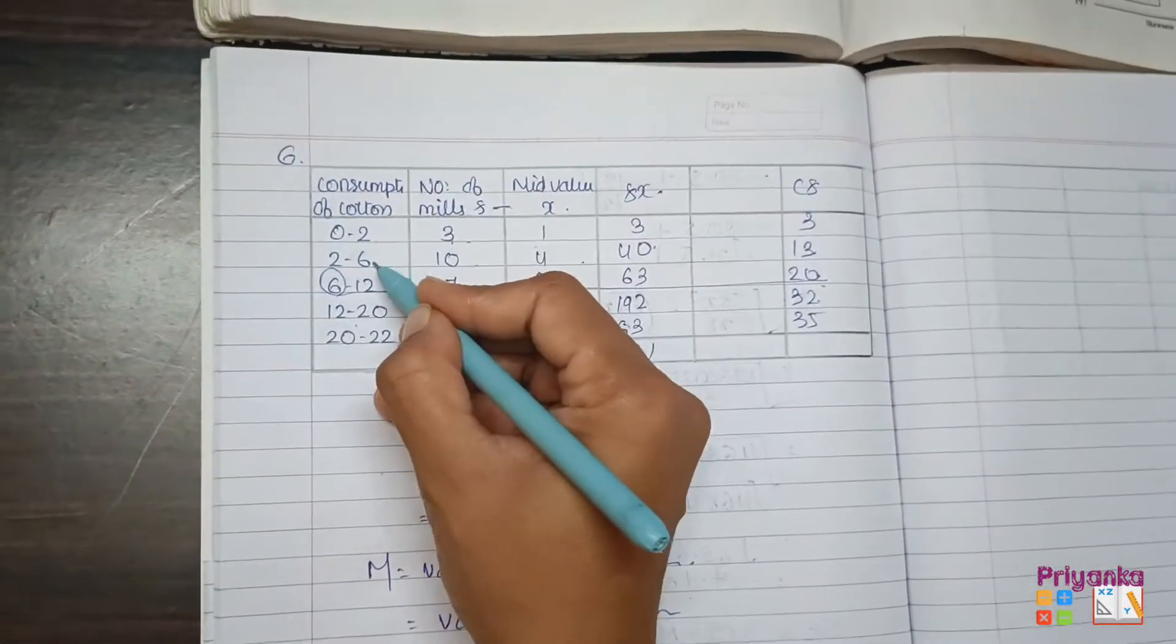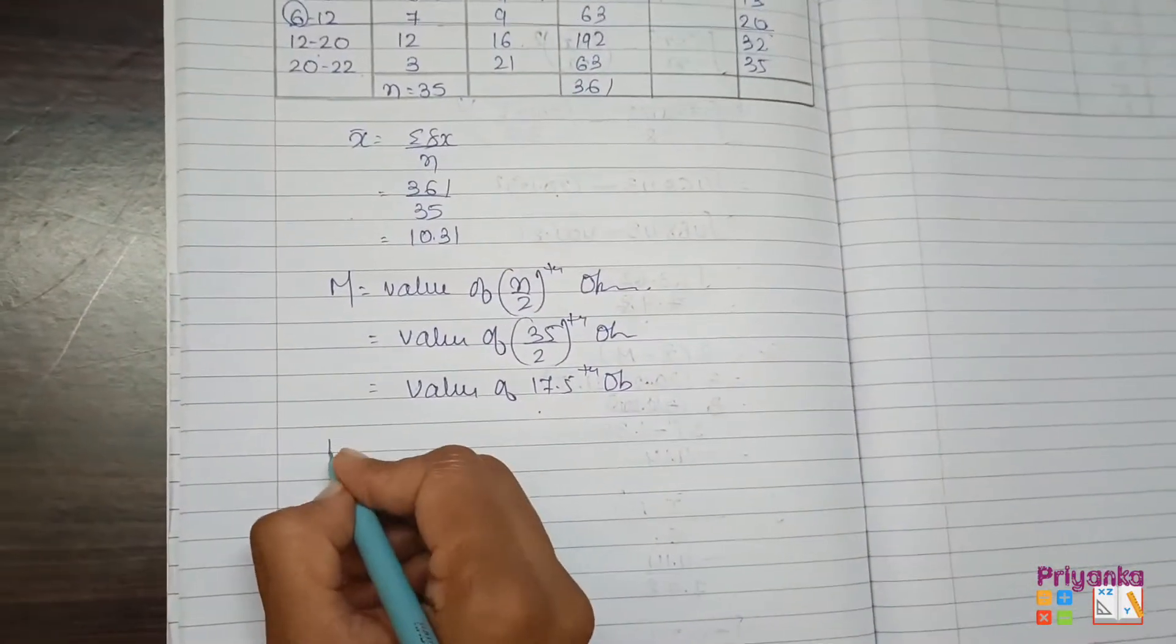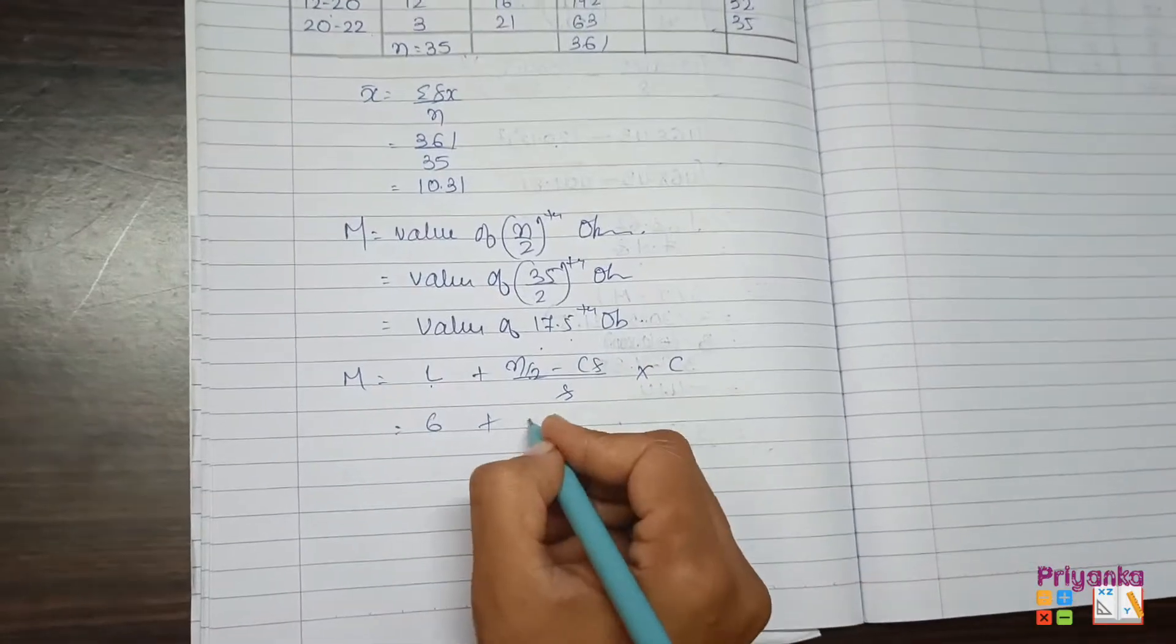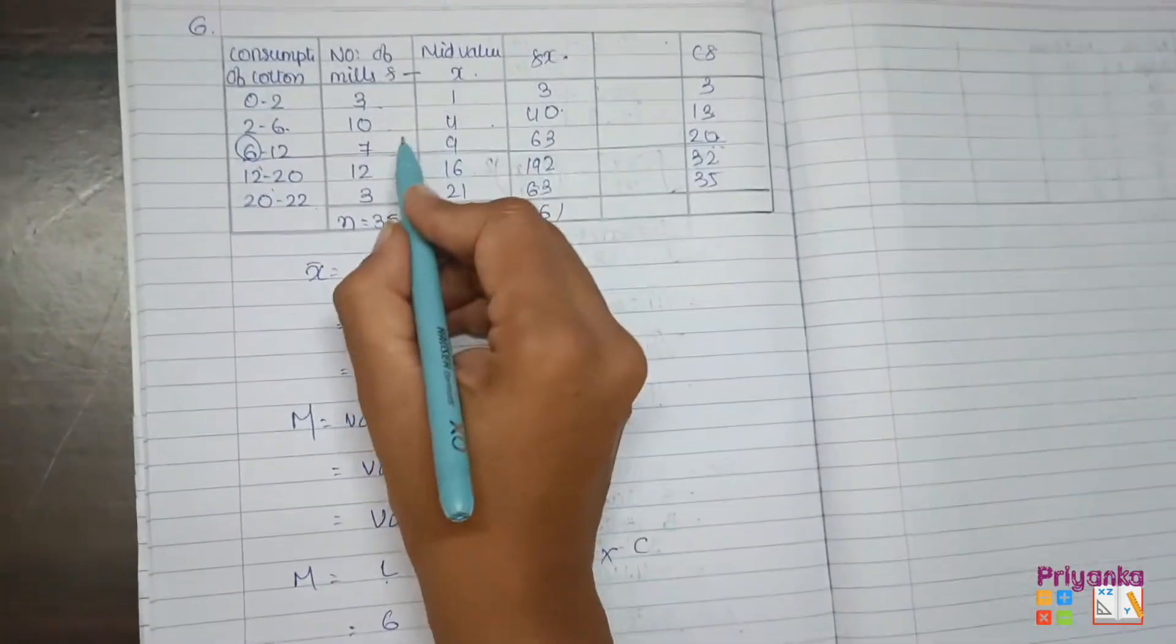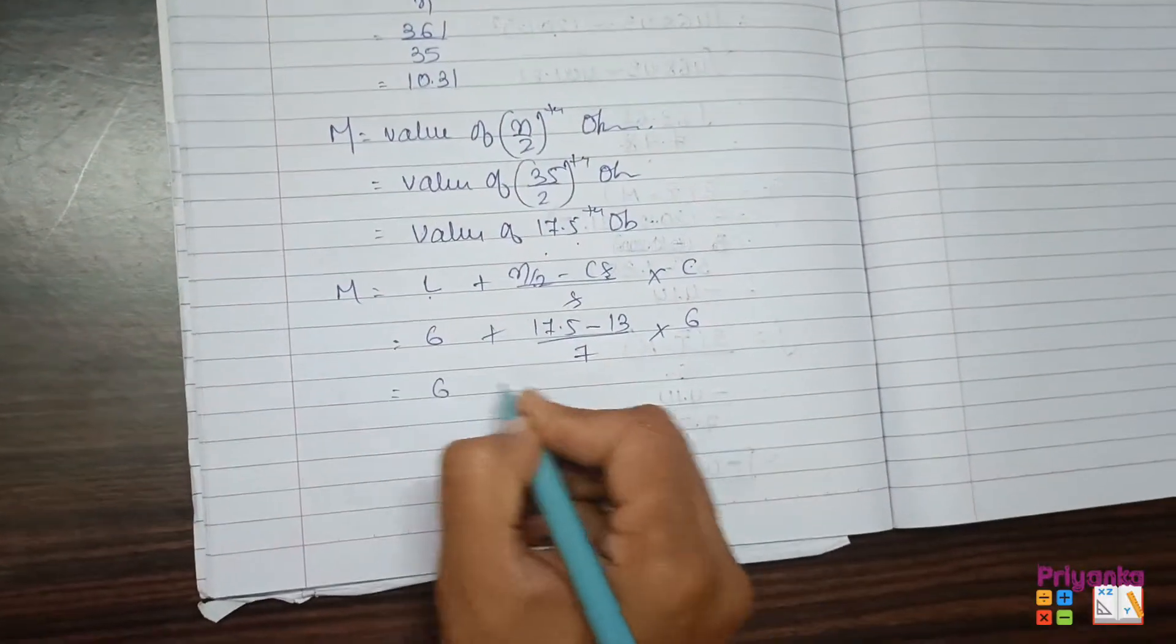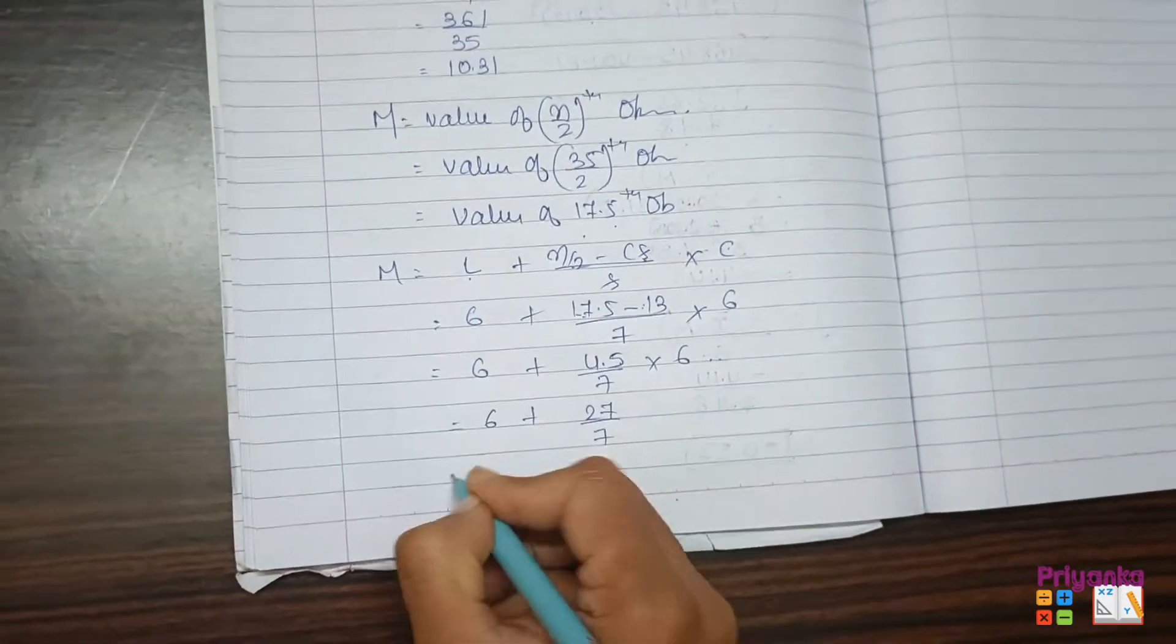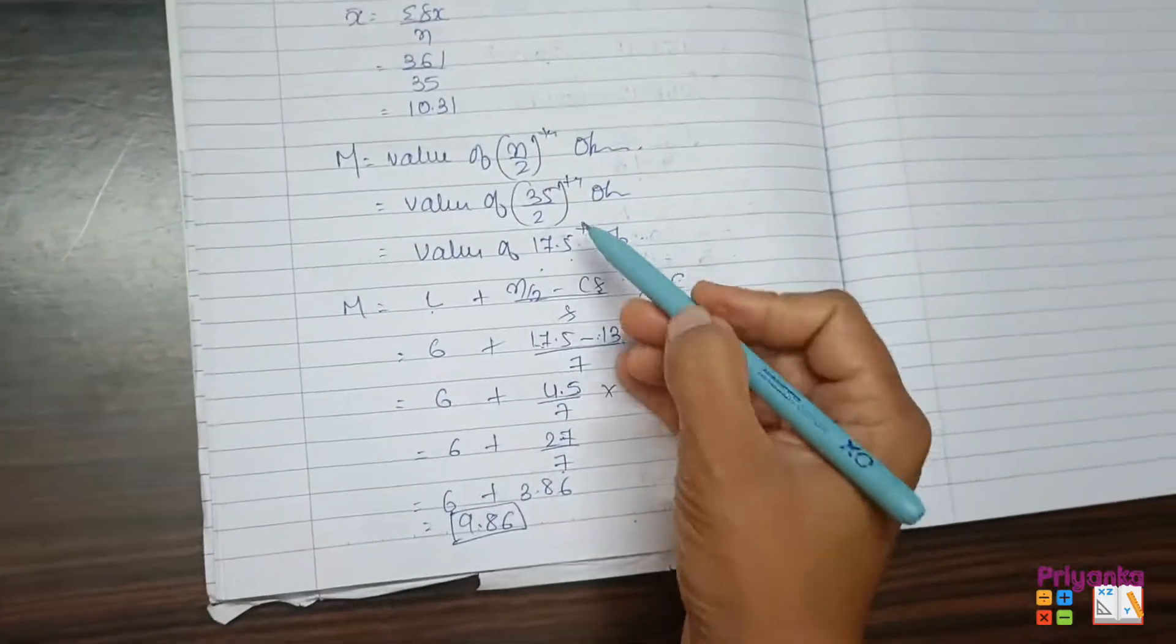This will be the lower limit. Since the lower limit matches with upper limit, this is exclusive frequency distribution. We don't need any calculation, directly use the formula: l plus n upon 2 minus cf upon frequency into class length. Here the lower limit is six. N upon two is seventeen point five, minus cf which is thirteen. Frequency is seven, and class length is six. So six plus 4.5 divided by 7 into 6. Six plus 27 divided by 7 is 3.86, and the median is 9.86.